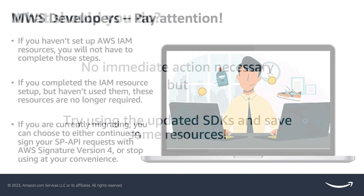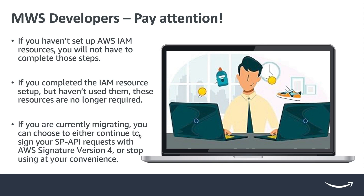For our MWS developers actively transitioning to SP API, there are a few pointers to keep in mind, which we'll detail in the description below. To summarize, if you are in the middle of the transition, it's your choice whether to continue signing SP API requests with AWS Signature version 4 or not.